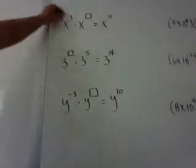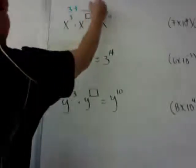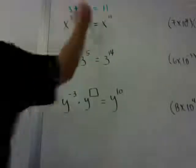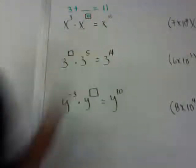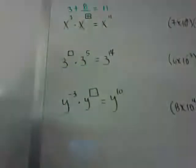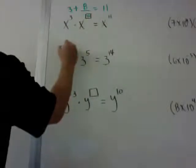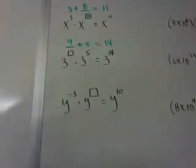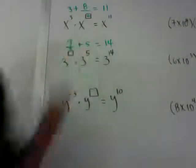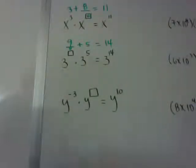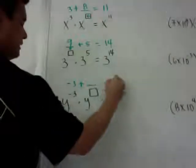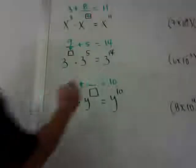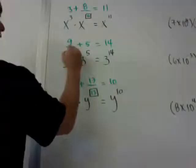Here are some fill-in-the-box problems from the homework. If I have x to the third and want to get x to the 11th, it's asking 3 plus what equals 11 — the answer is 8, since 11 minus 3 is 8. Another: what plus 5 equals 14 — the answer is 9. And if I have x to the negative 3 times x to the box equals x to the 10th, it's negative 3 plus what equals 10, so the answer is 13.